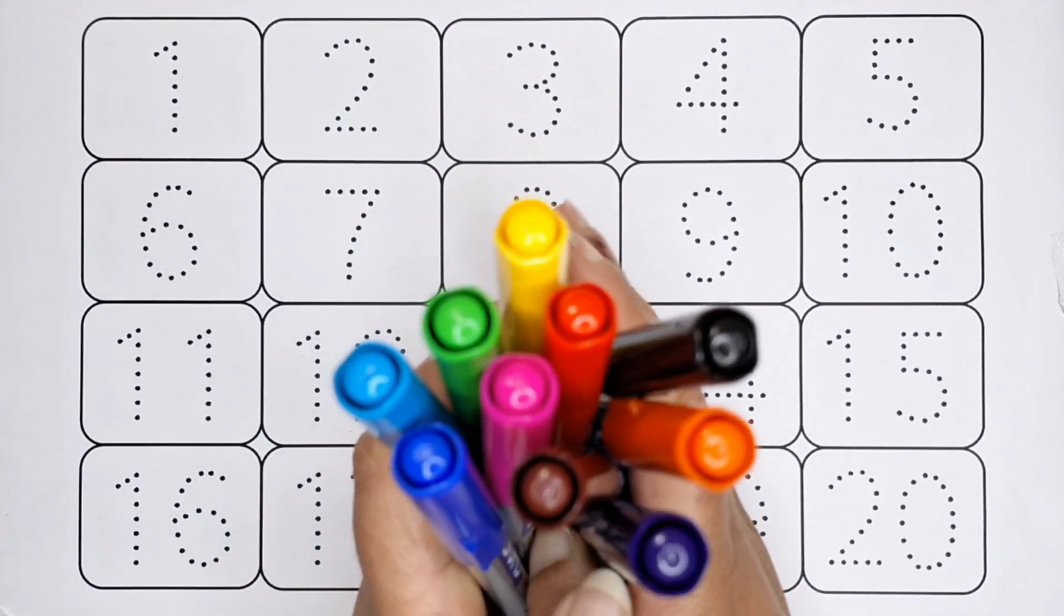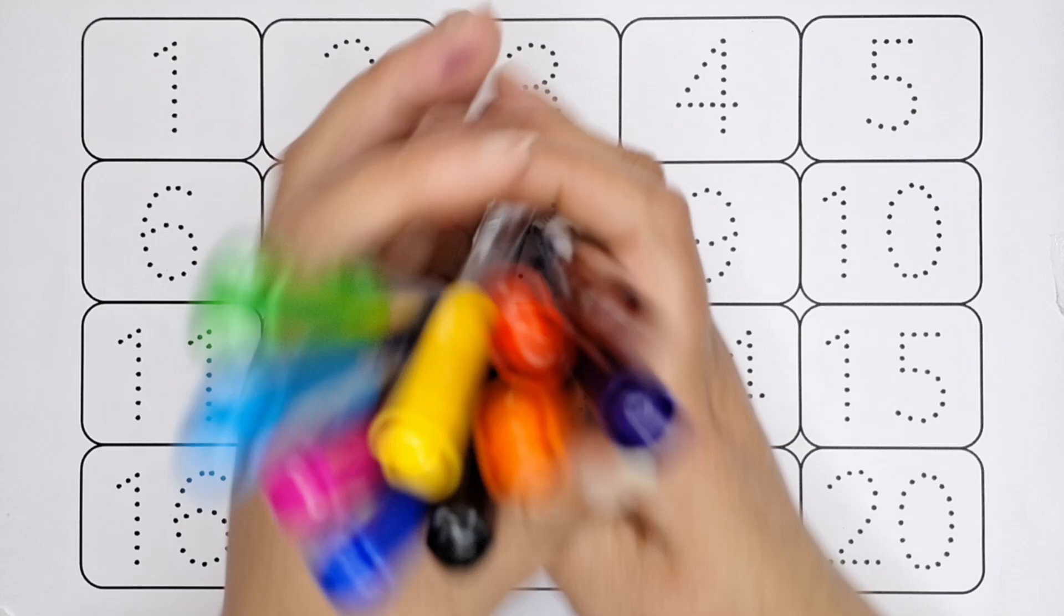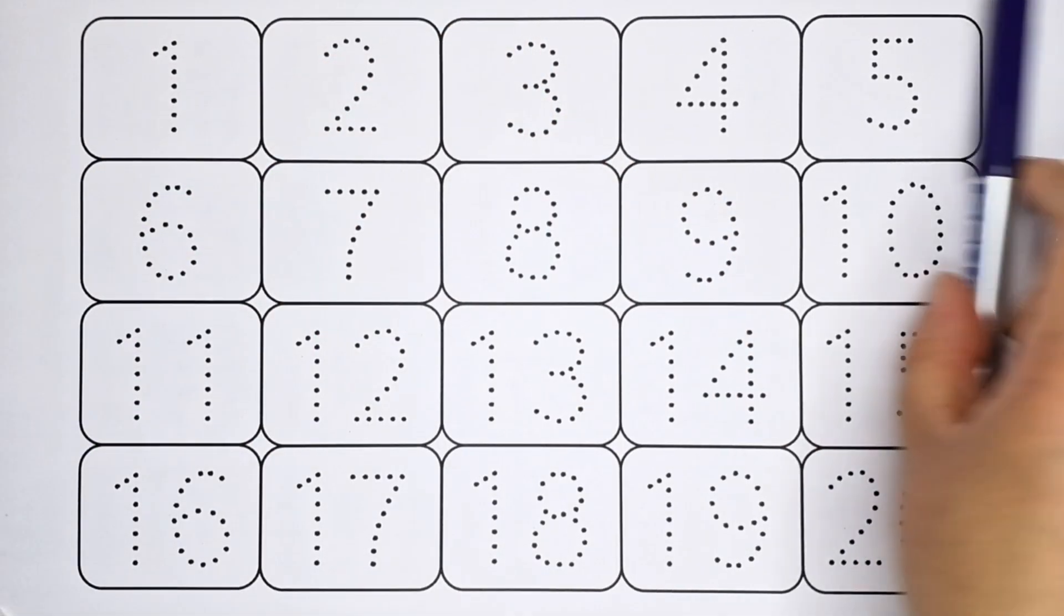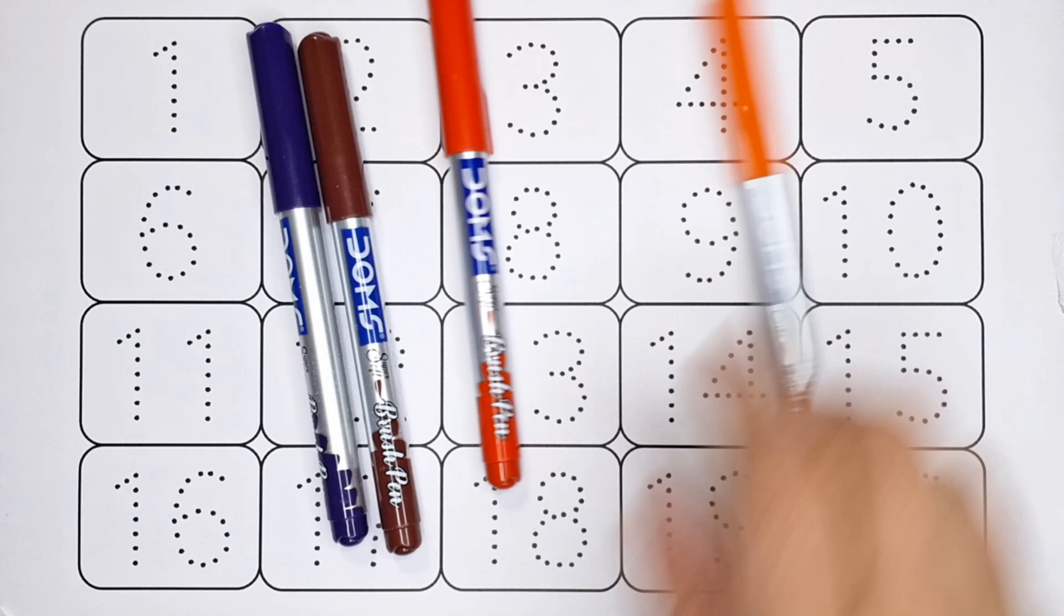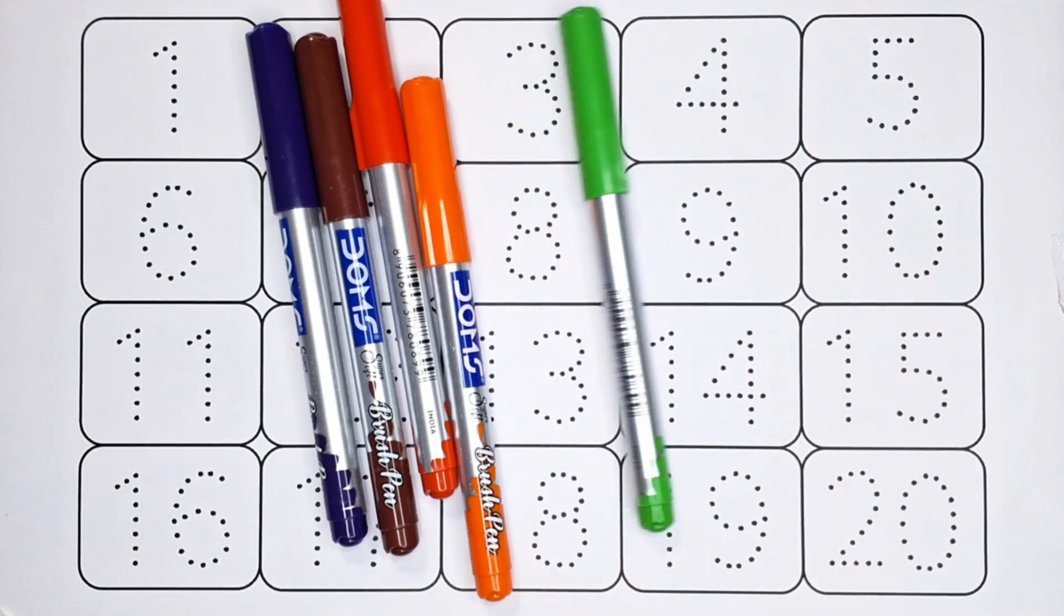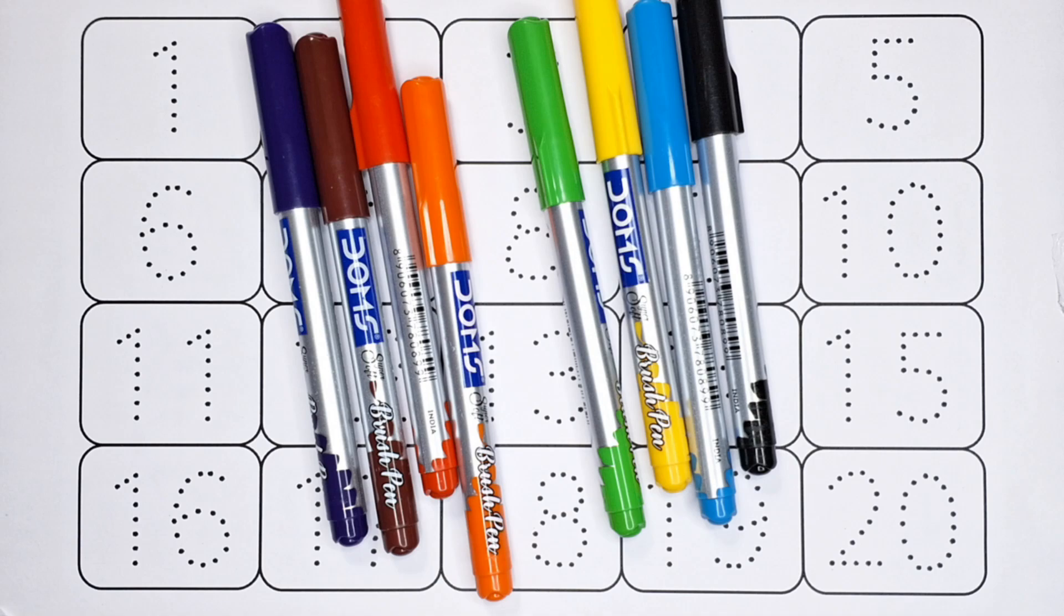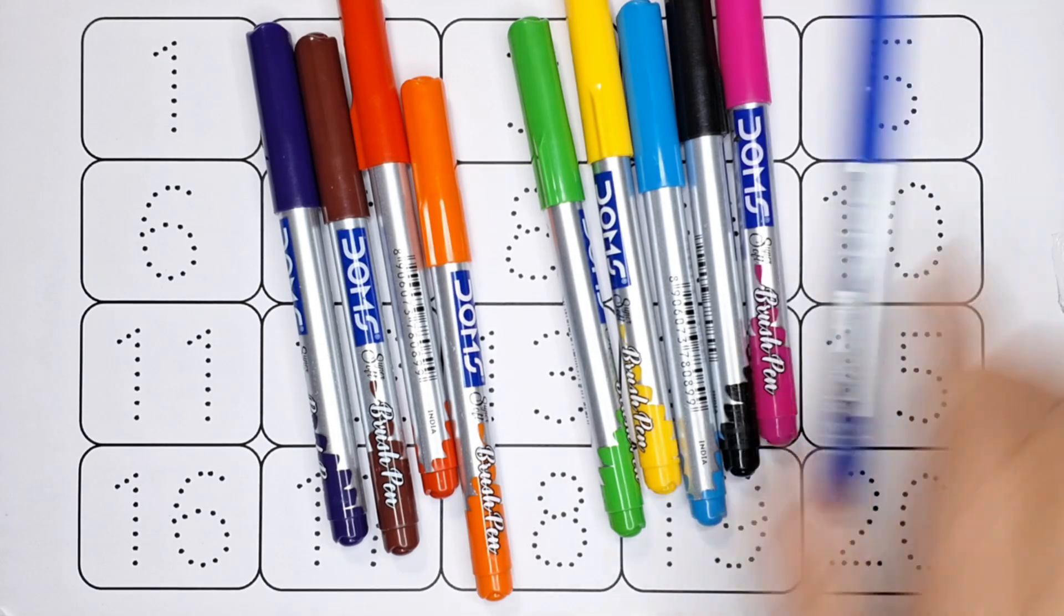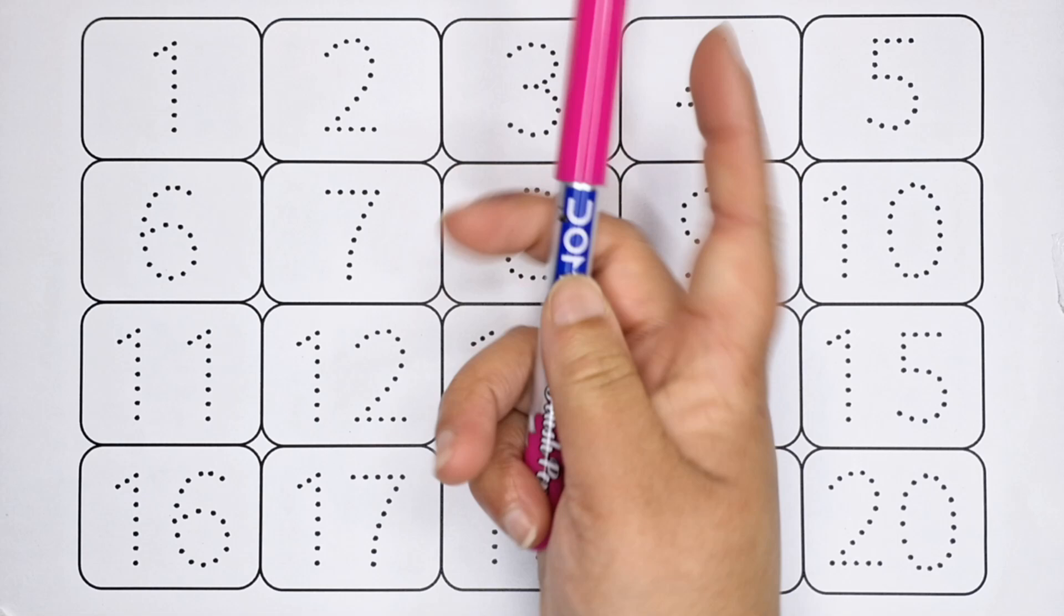Hello kids, welcome to Happy Study Class. Kids, let's learn colors name: purple color, brown color, red color, orange color, green color, yellow color, sky blue color, black color, pink color, blue color. Kids, today will be learning number counting 1 to 20.